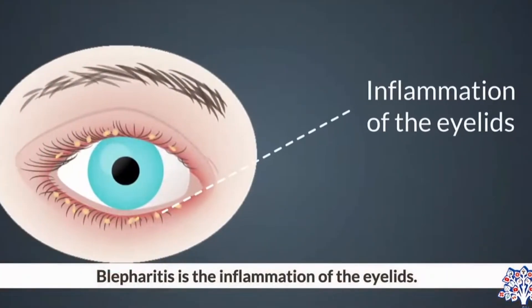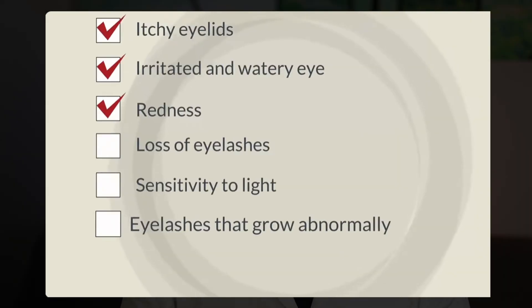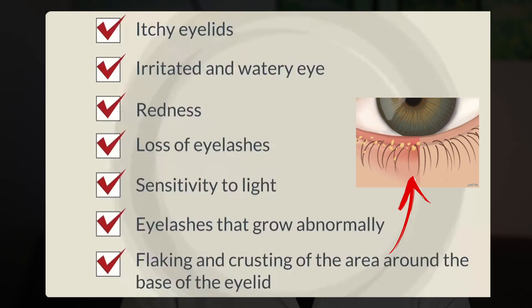Let's start by understanding exactly what blepharitis is. Blepharitis is an inflammation of the eyelids, usually around the base of your eyelashes. It can cause symptoms like redness, itching, burning, grittiness, and even flaky skin or crust forming on your eyelids. It's more common than you think and is usually manageable with the right approach.